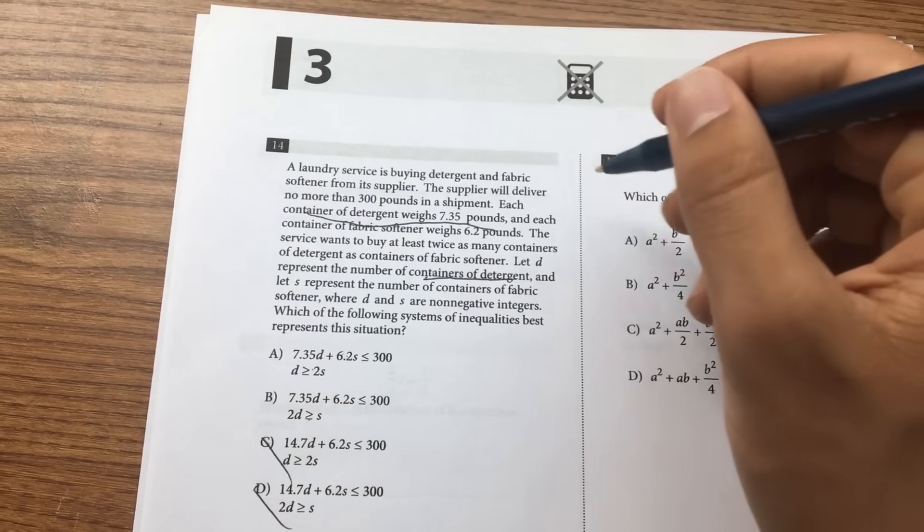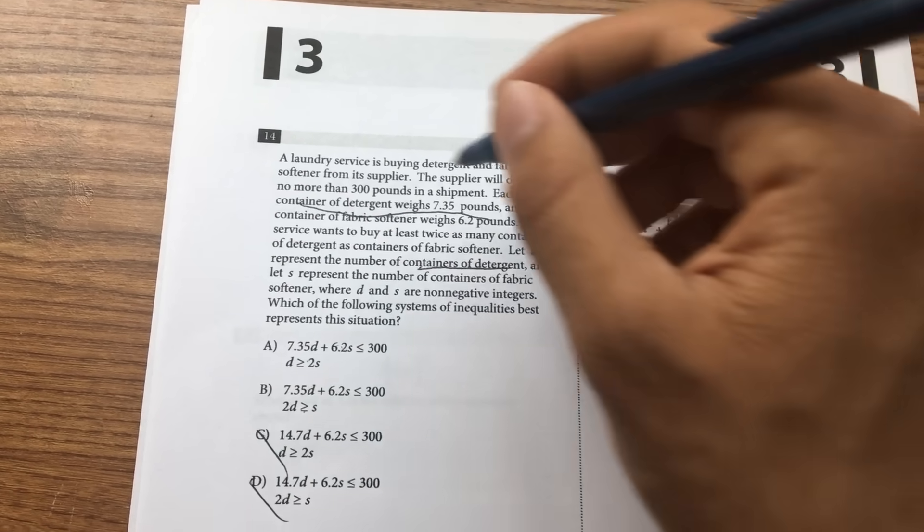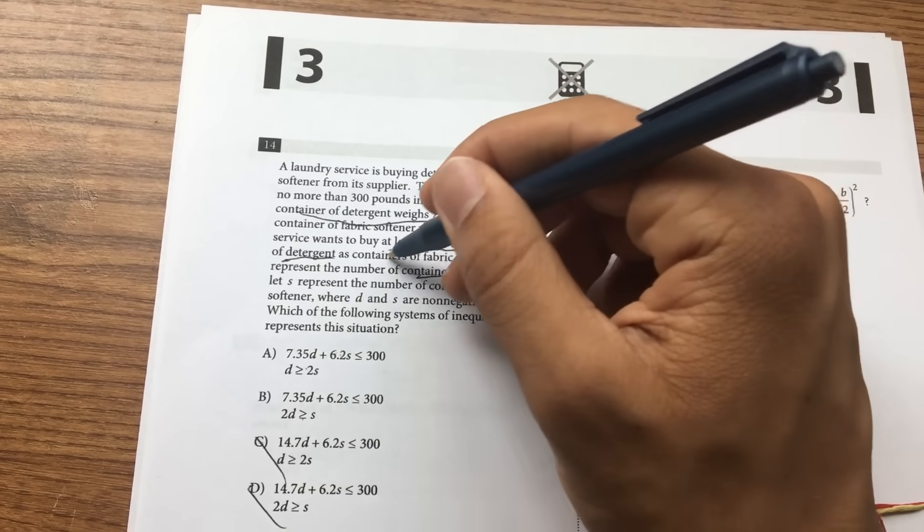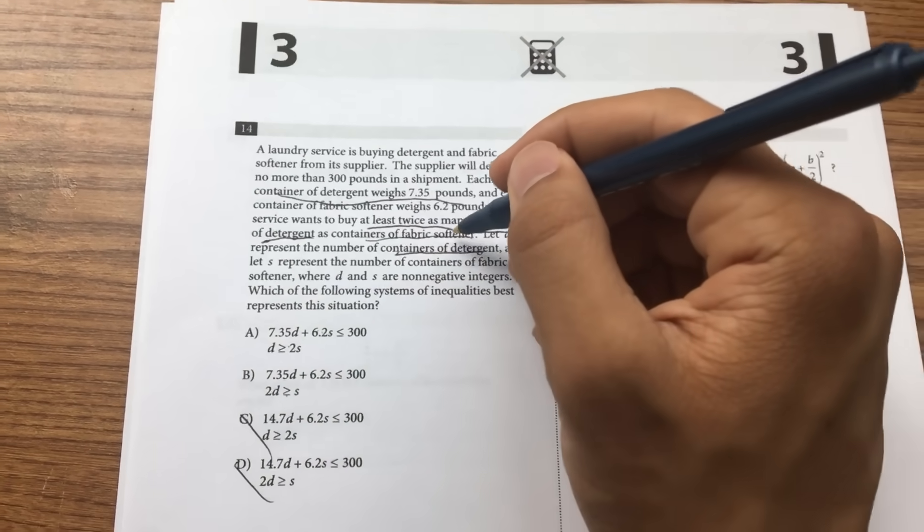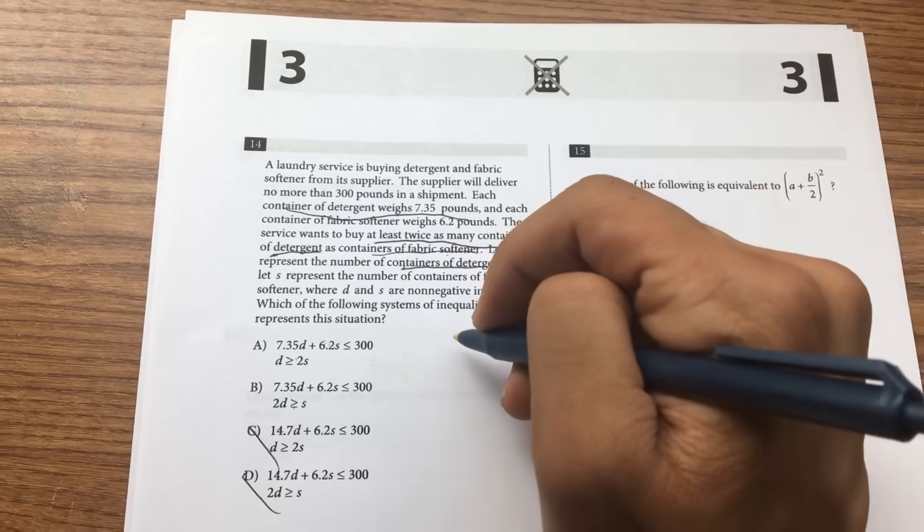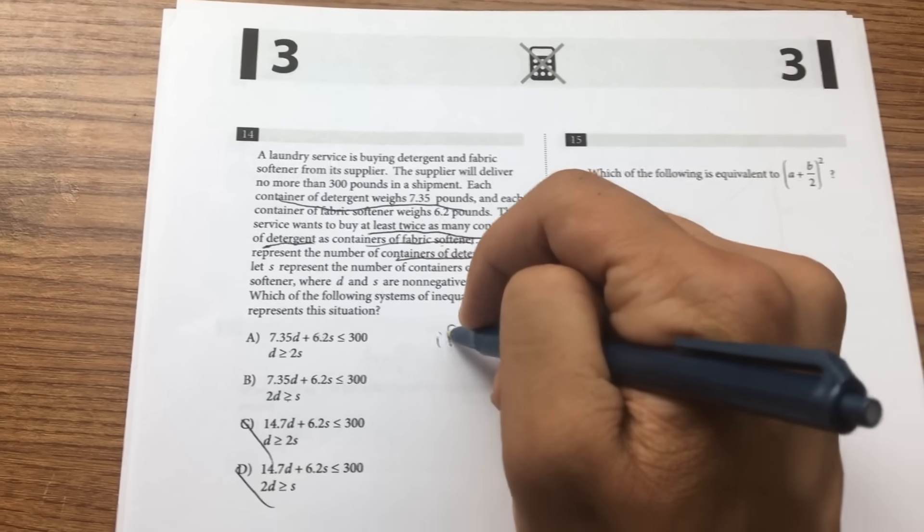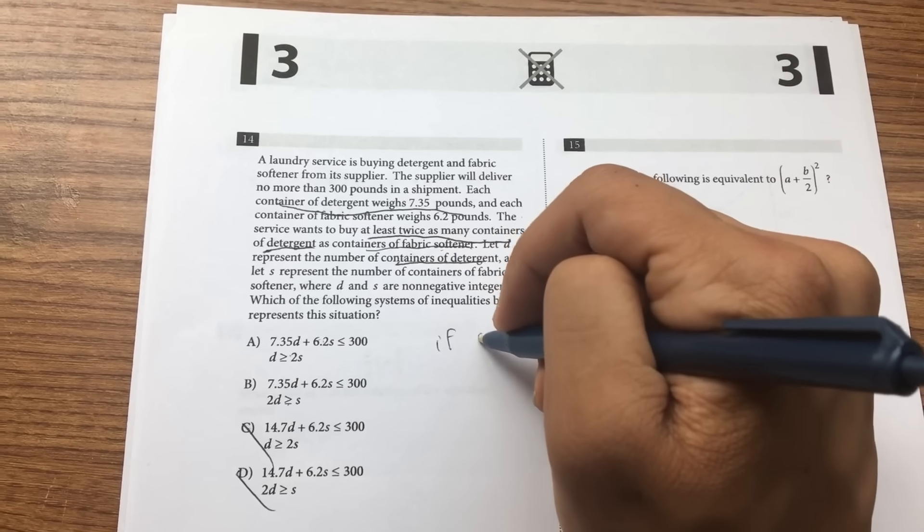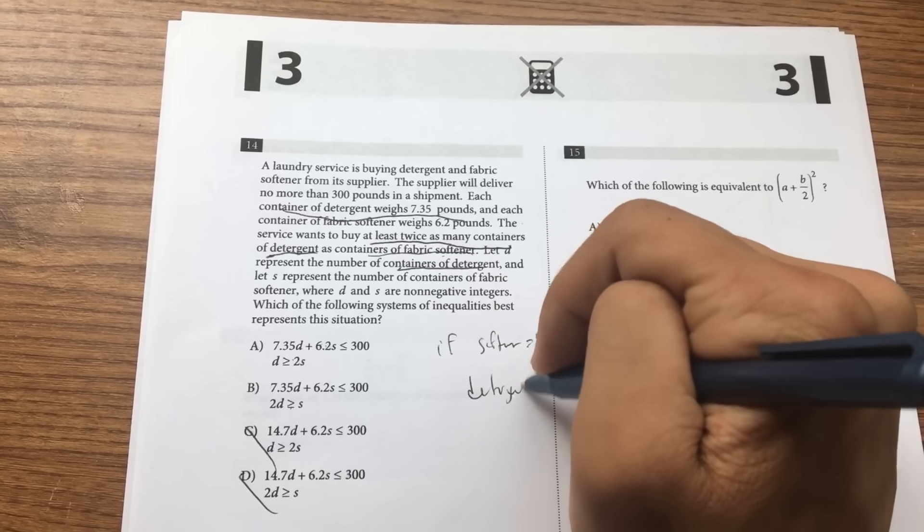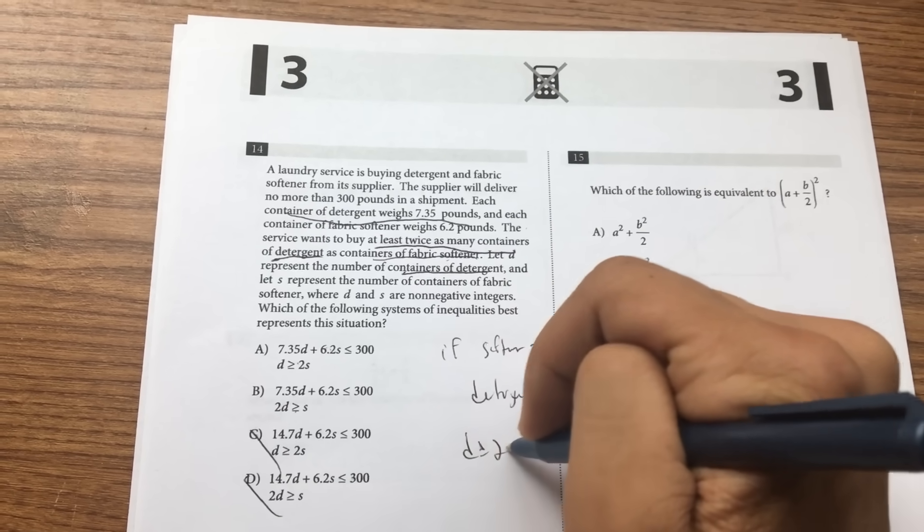Now to distinguish between these two, you have to look at the second inequality. The service wants to buy at least twice as many containers of detergent as containers of fabric softener. So if there are 4 fabric softeners, they want twice as many detergents, they want 8 detergents. So if softener equals 4, detergent equals 8. So d is greater than or equal to 2s.